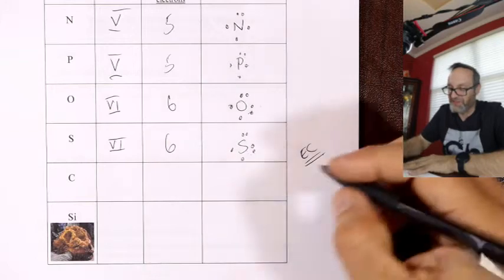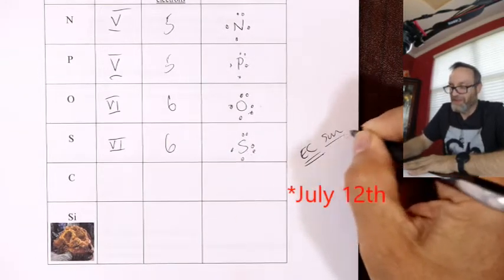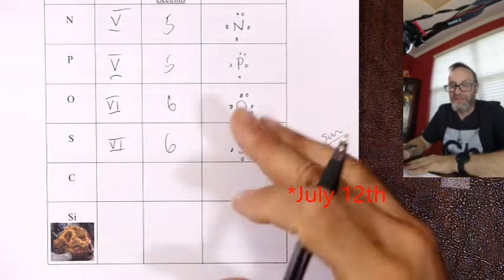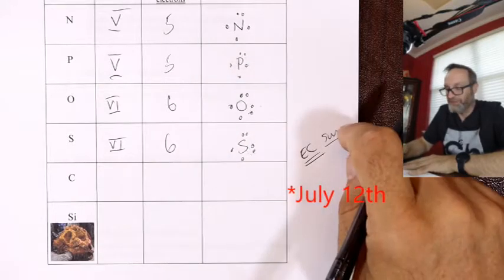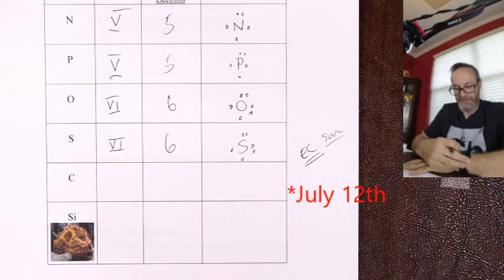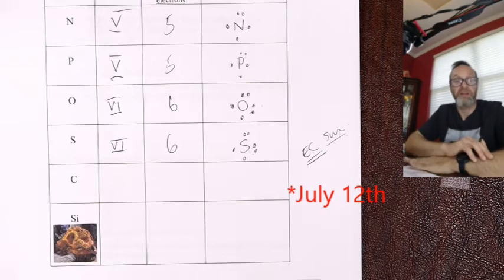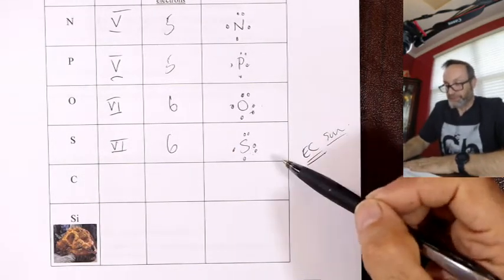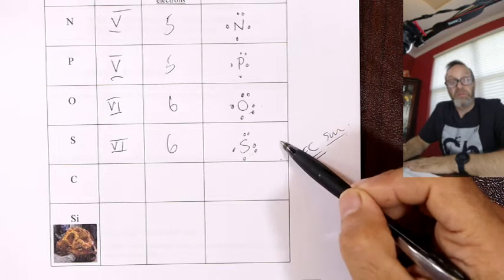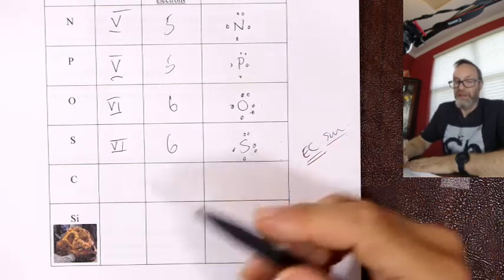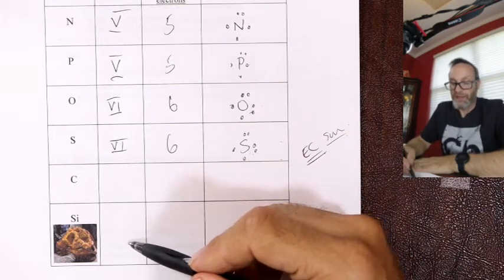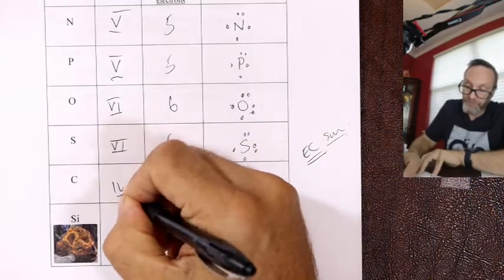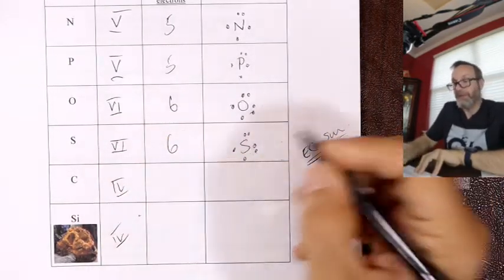Extra credit: show me a picture of a volcanic vent with all the life around it for one point of extra credit — due Sunday of this week. You've got a test coming up so I'll let the lab and lecture run through until Sunday. The last pair are carbon and silicon, column four — four valence electrons.